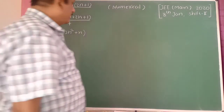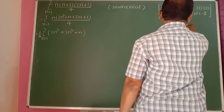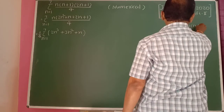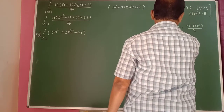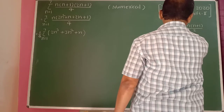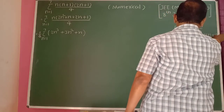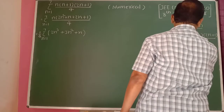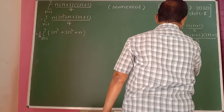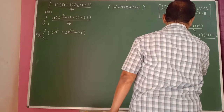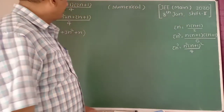There are standard formulas: summation of n equals n times n plus 1 divided by 2; summation of n squared equals n times n plus 1 times 2n plus 1 divided by 6; and summation of n cubed equals n squared times n plus 1 squared divided by 4.